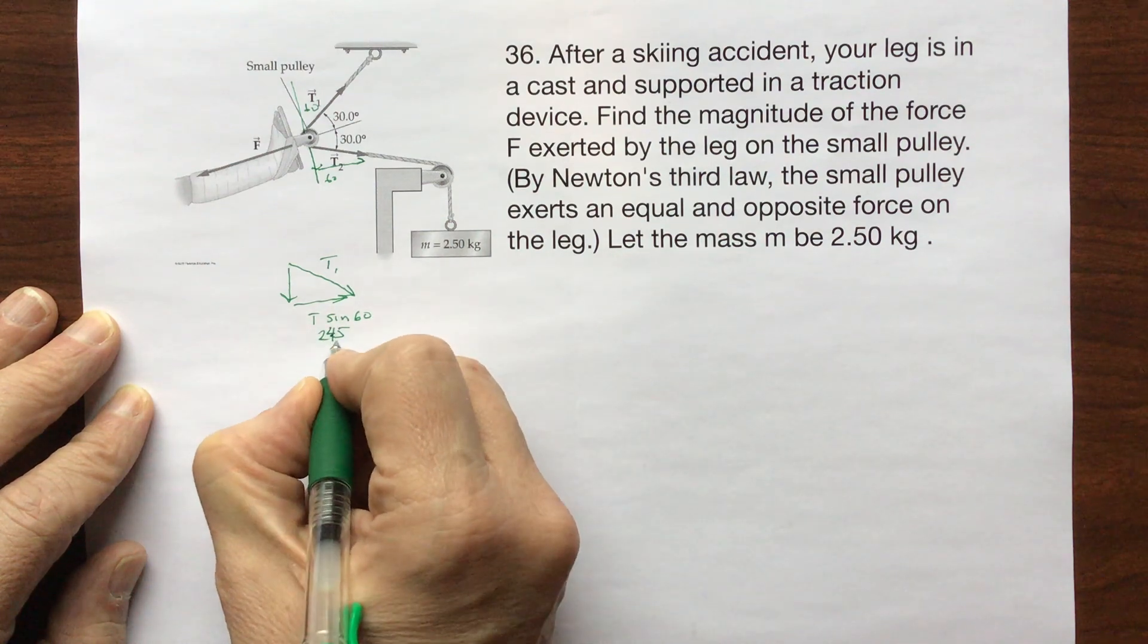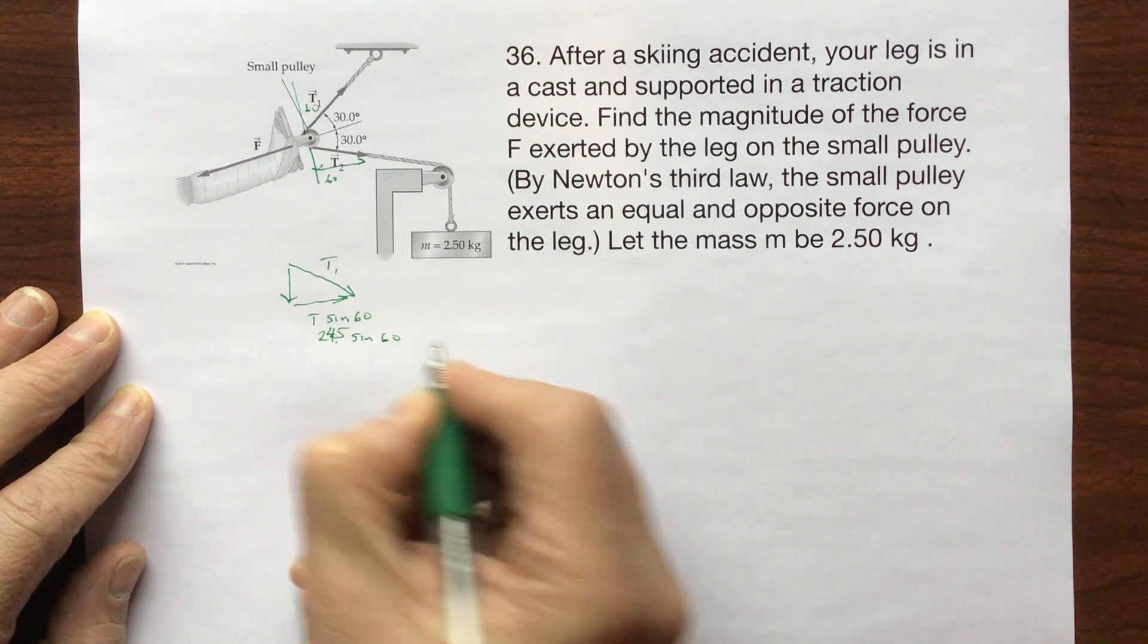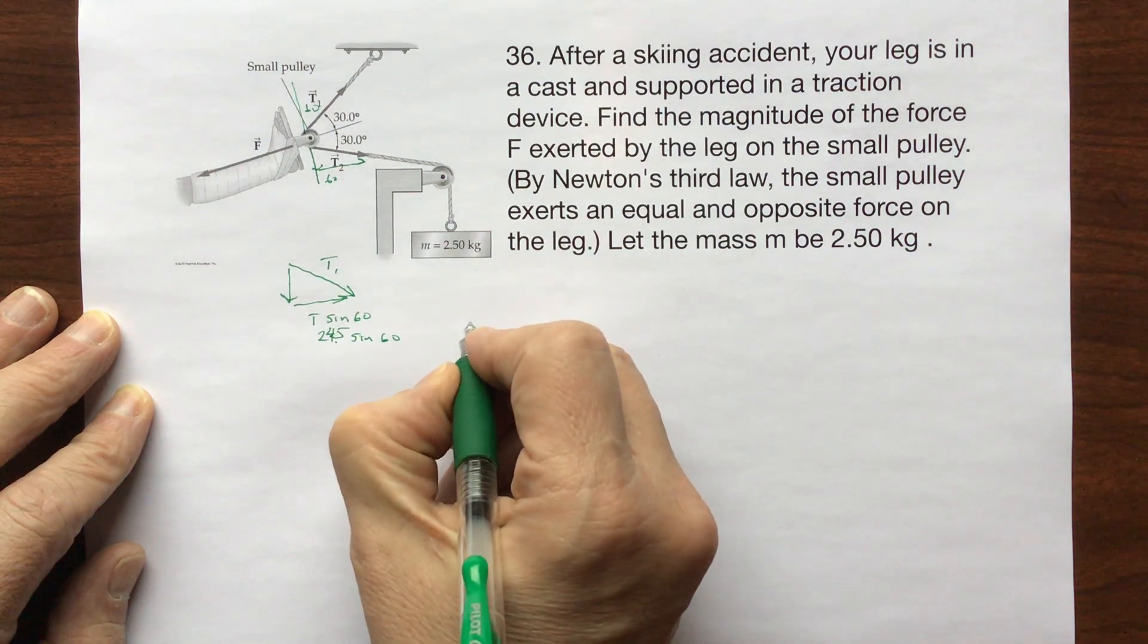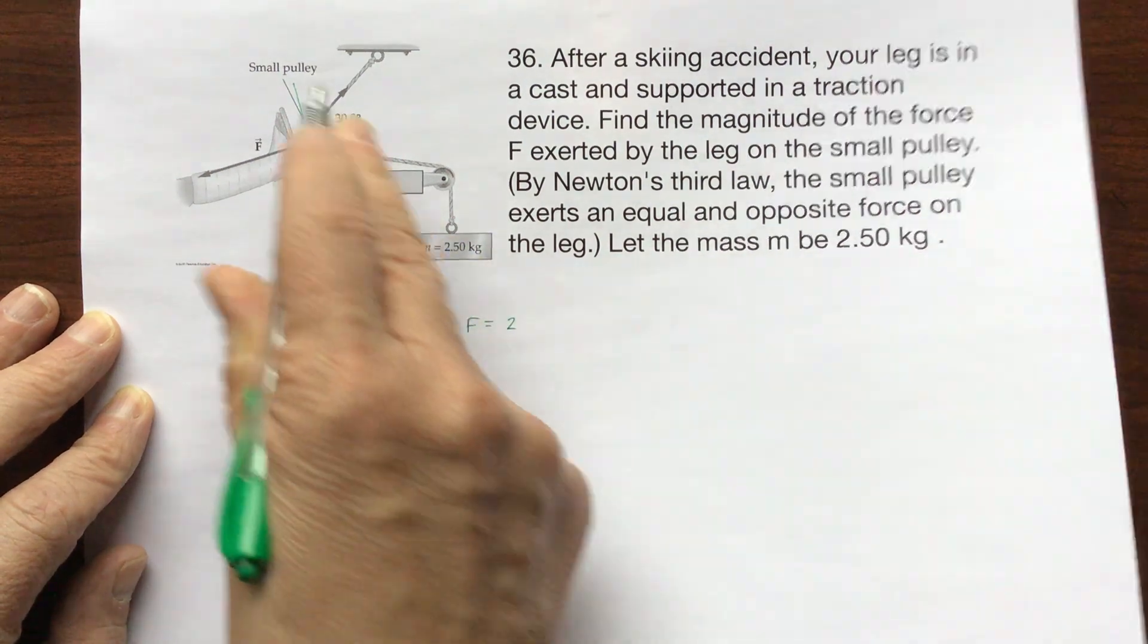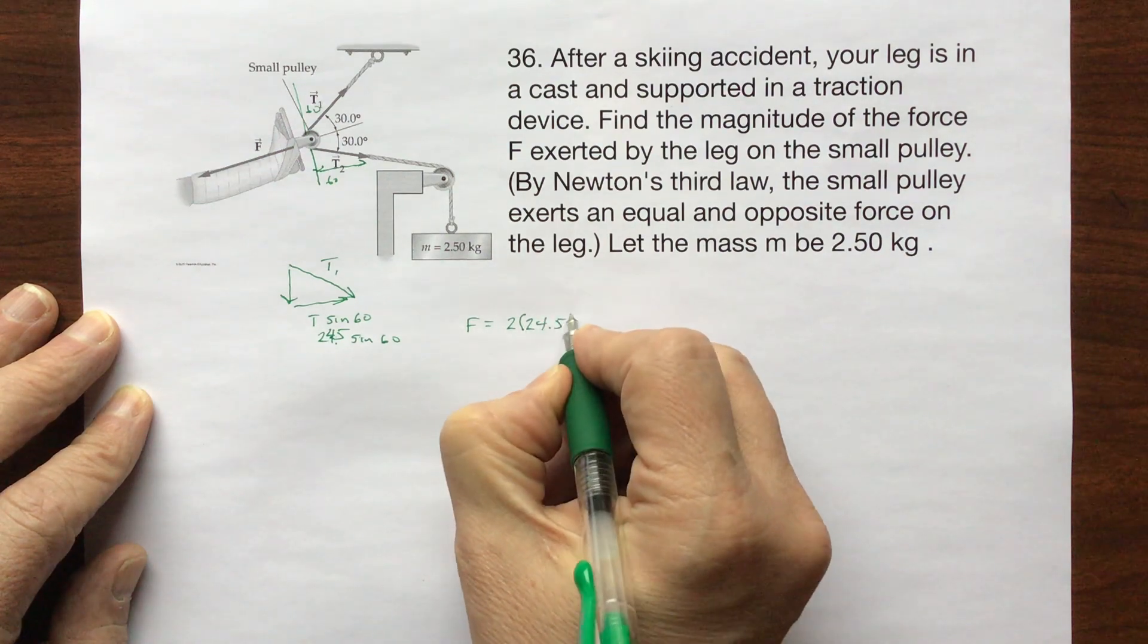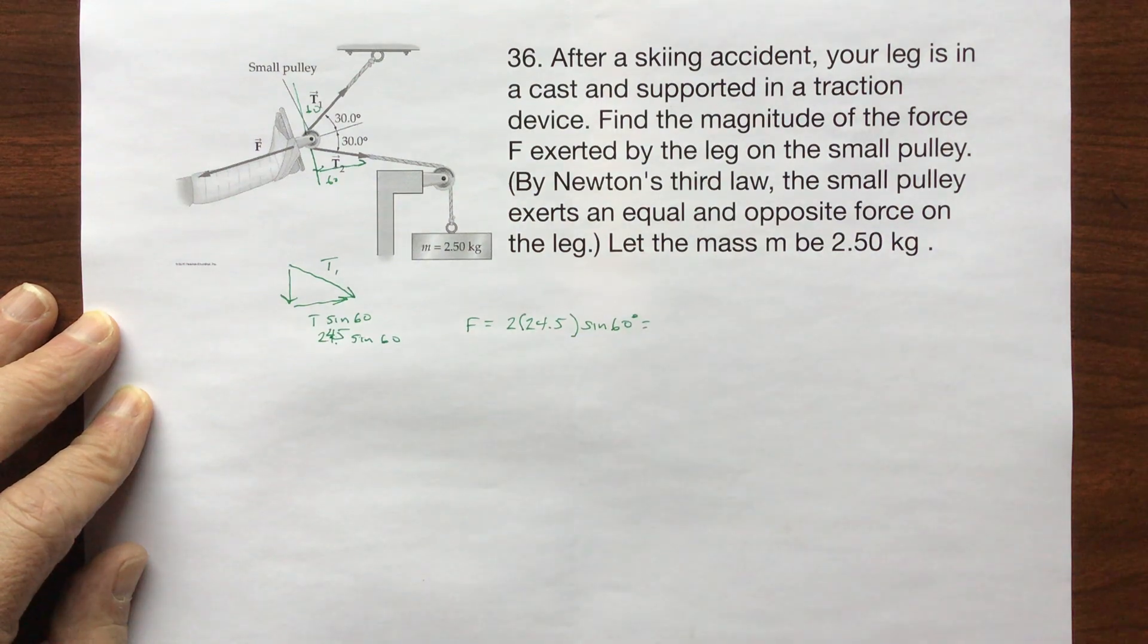Didn't do it right. 24.5 newtons is T times the sine of 60 on both sides. So I have all the parts. So the force on the leg is going to be equal to 2, since there's two of these, times 24.5 times the sine of 60 degrees.